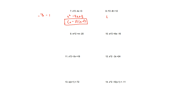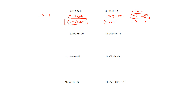Number 8, we have t squared minus 8t plus 12. Same situation as number 7 — we have to multiply into a positive number but add up to a negative number, so both factors have to be negative. The factors of 12 are 12 and 1, 6 and 2, and 4 and 3. The pair that adds up to negative 8 is negative 6 and negative 2. So it's going to be t minus 6 times t minus 2 for your answer.